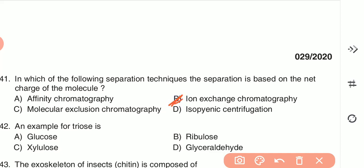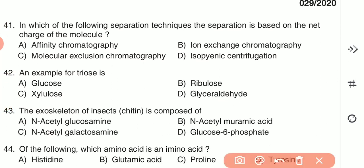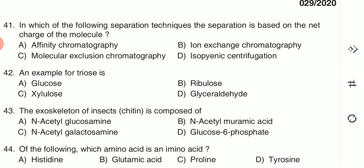Question 42: An example for triose is — (A) glucose, (B) ribulose, (C) cellulose, or (D) glyceraldehyde. Triose is an example of glyceraldehyde — option D is the correct answer.